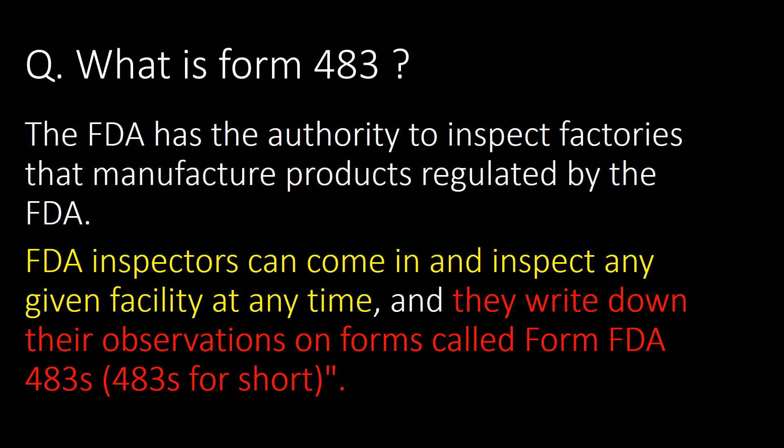Welcome. We will start with a very basic question: what is Form 483? The FDA has the authority to inspect factories that manufacture products regulated by the FDA. FDA inspectors can come in and inspect any given facility at any time, and they write down their observations on forms called Form FDA 483.